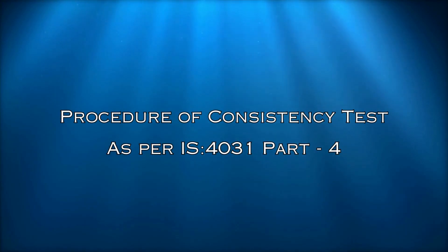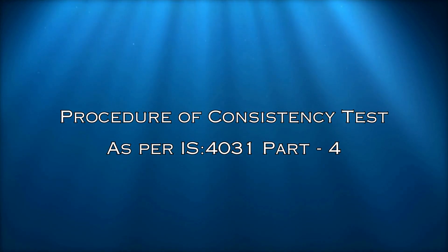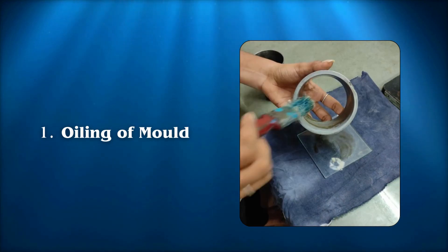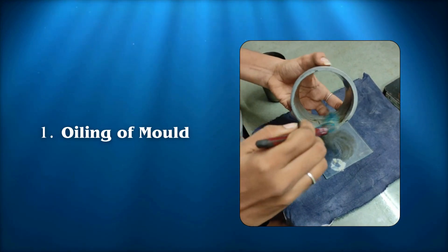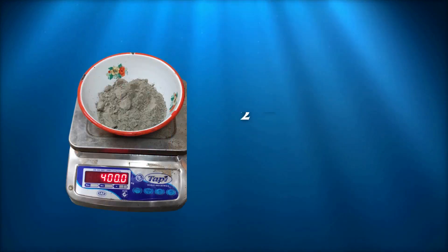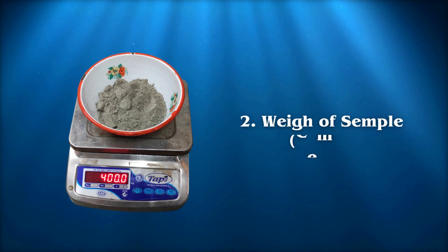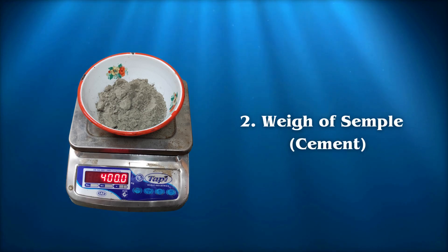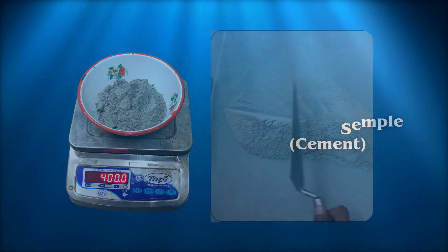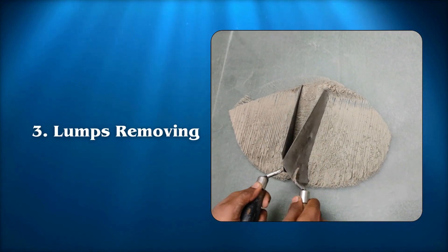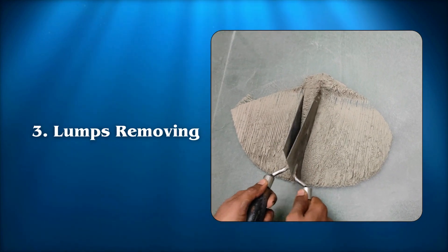Here is the procedure for the consistency test of cement. Firstly, begin by oiling the VCAT mold to prevent the cement paste from sticking to it during the test. Then carefully take approximately 400g of cement and ensure it is free from any lumps or impurities using a gauging trowel.